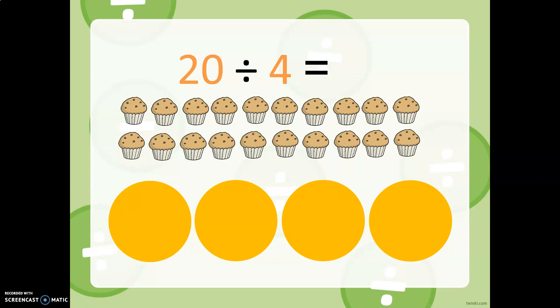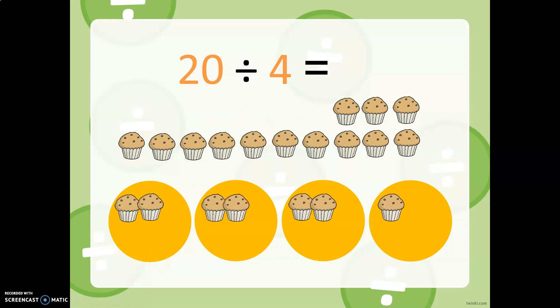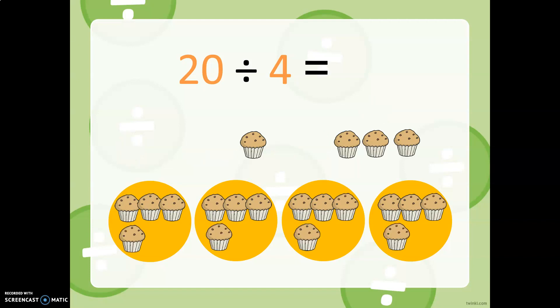And we have 20 cupcakes, and now four tables. So let's see how many. We've got two, three, four, five. Five cupcakes per table. So 20 divided by four equals five.